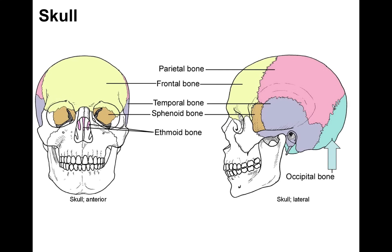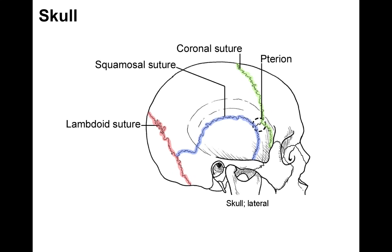The occipital bone is the very posterior bone of the skull — the one that touches the pillow when you lie back. All these bones give protection to the brain. There are sutures, which are fibrous joints that knit these skull bones together.